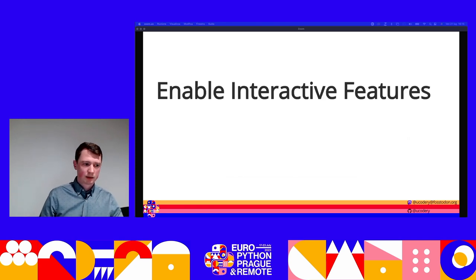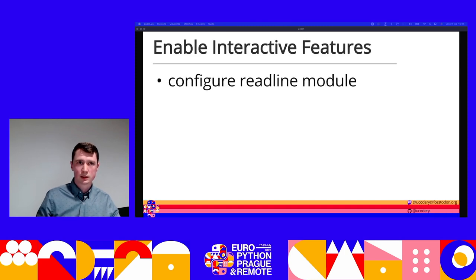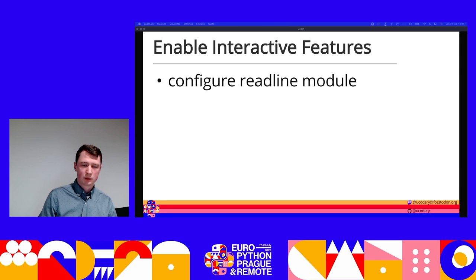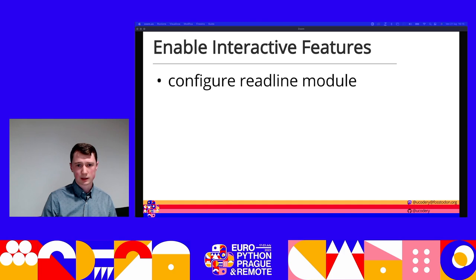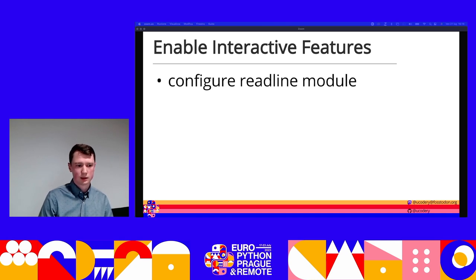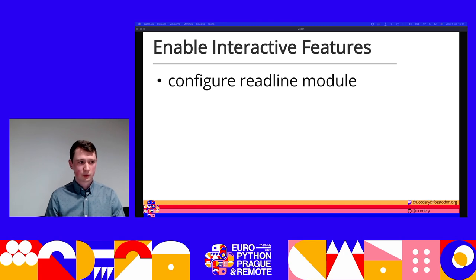So site is done adding to sys.path, and now it goes on to enable some interactive features. A lot of what makes the Python interactive shell nice to work with is because of site. It will import and configure the readline module — another standard library that comes with Python — which is a thin wrapper around the C readline library. This gives you things like tab completion in your Python REPL, command history, up-arrow or reverse search for your commands, and persistence of your history across sessions.